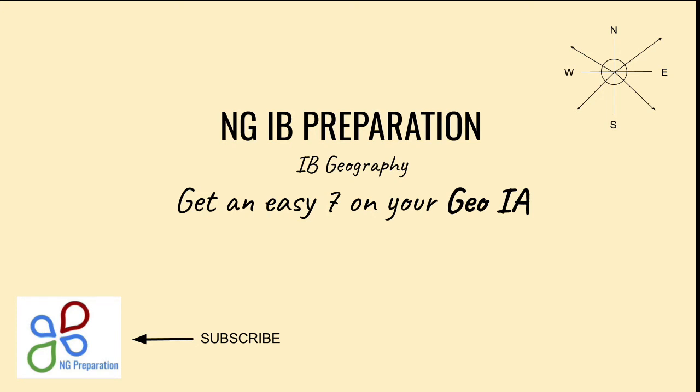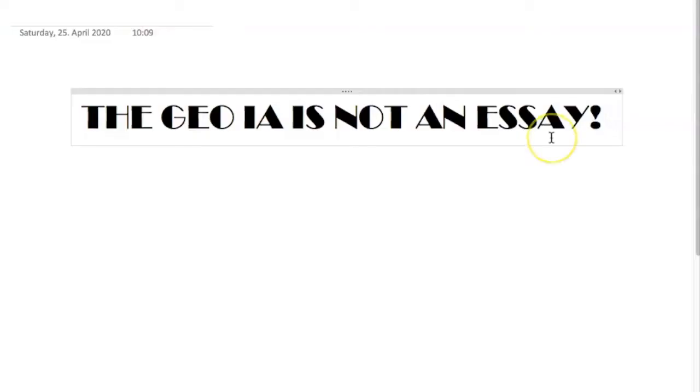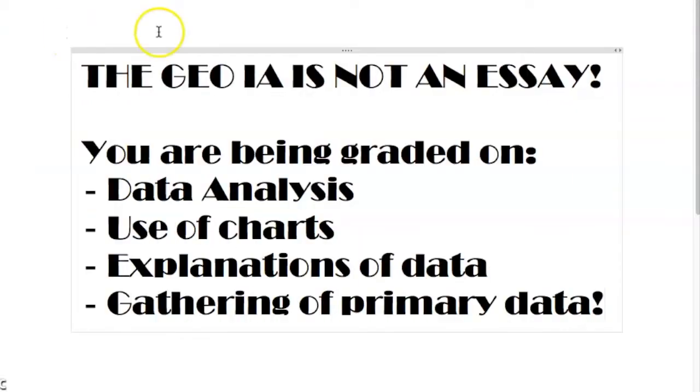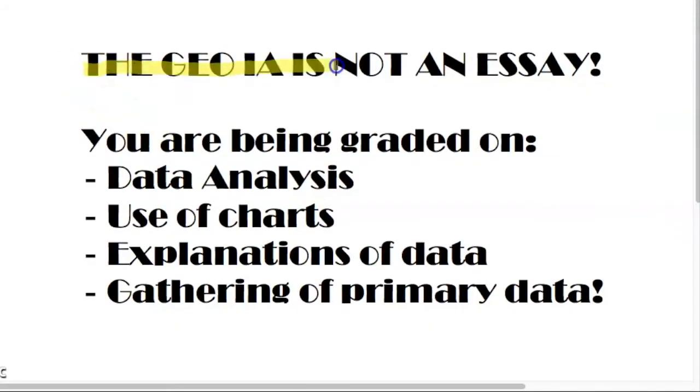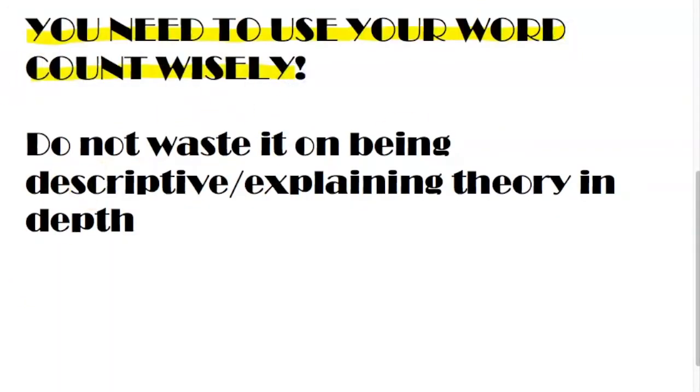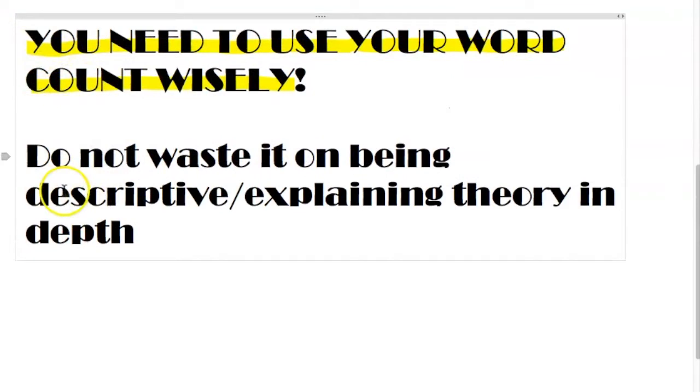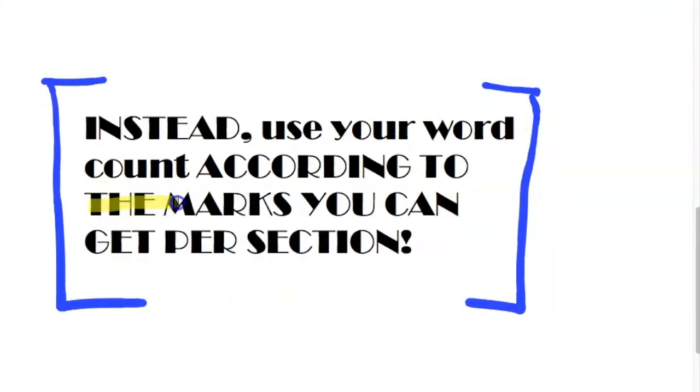Hi everyone and welcome back to NGIV Preparation. On Instagram, a lot of you suggested that I do a video on the geography IA and how you can get a 7 on that. I'm going to start by mentioning the biggest mistake that students make when writing their IA that limits their marks. Your IA is supposed to be analytical, based on data processing and data analysis. That is where you get the most marks. Your IA isn't supposed to be descriptive or mostly about geographic theory. It should be you proving that you can use geographic theory and data analysis to support an argument.